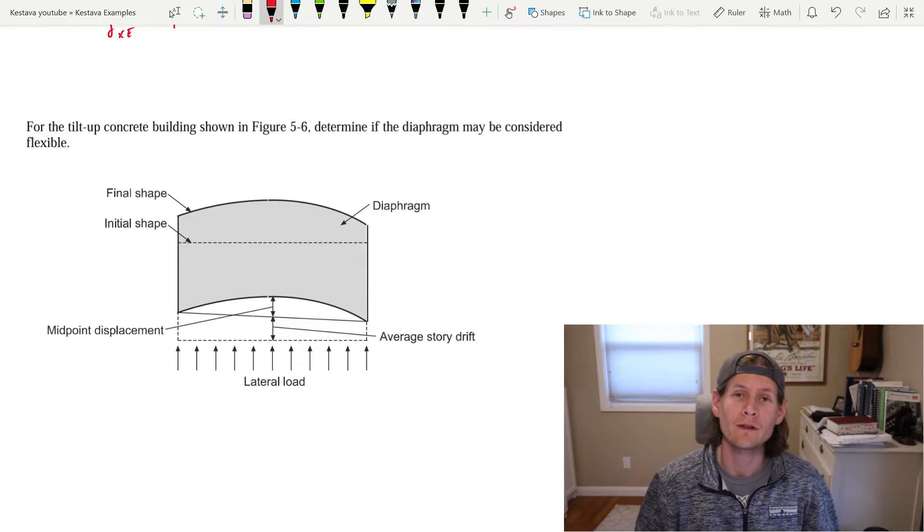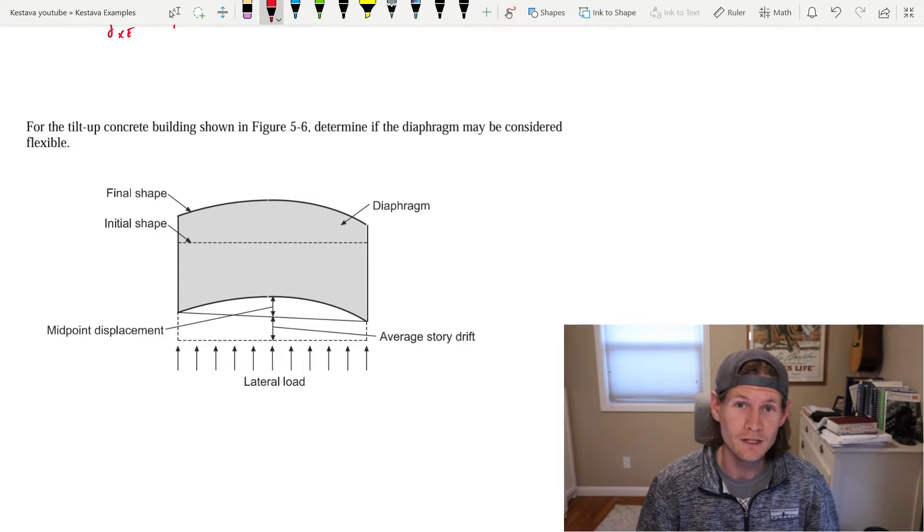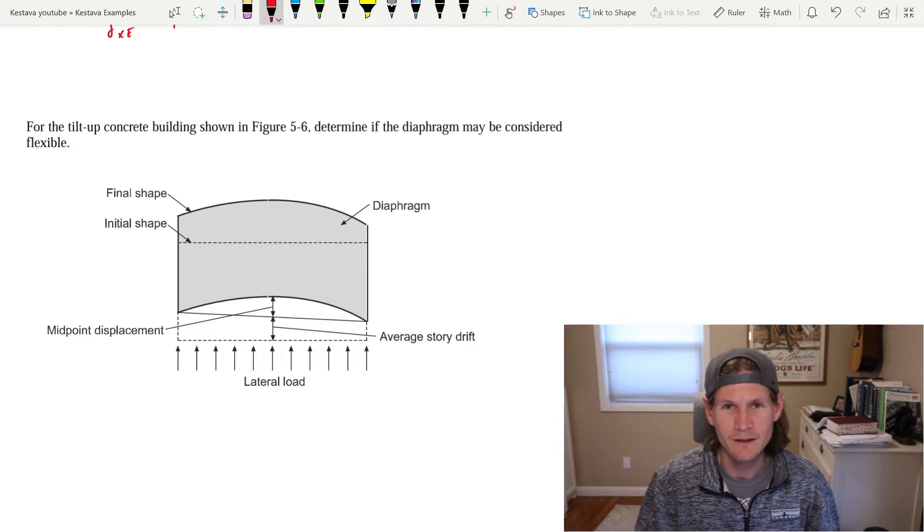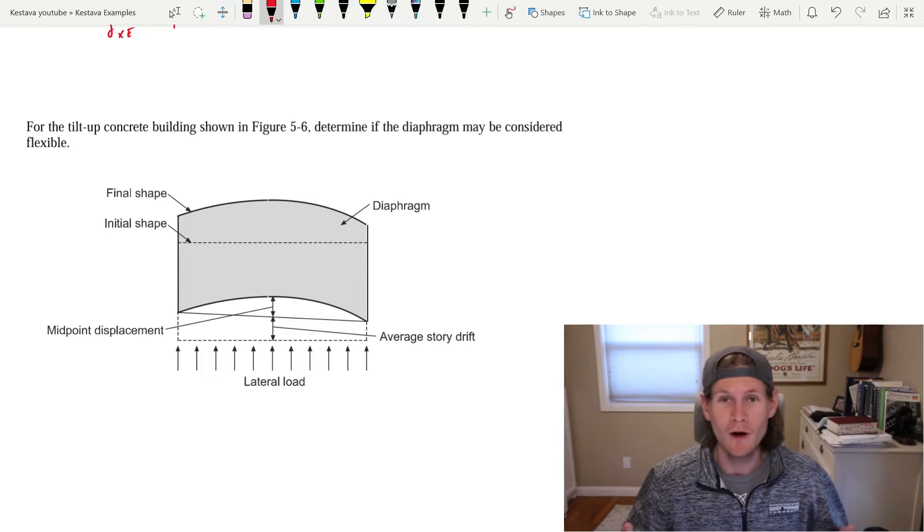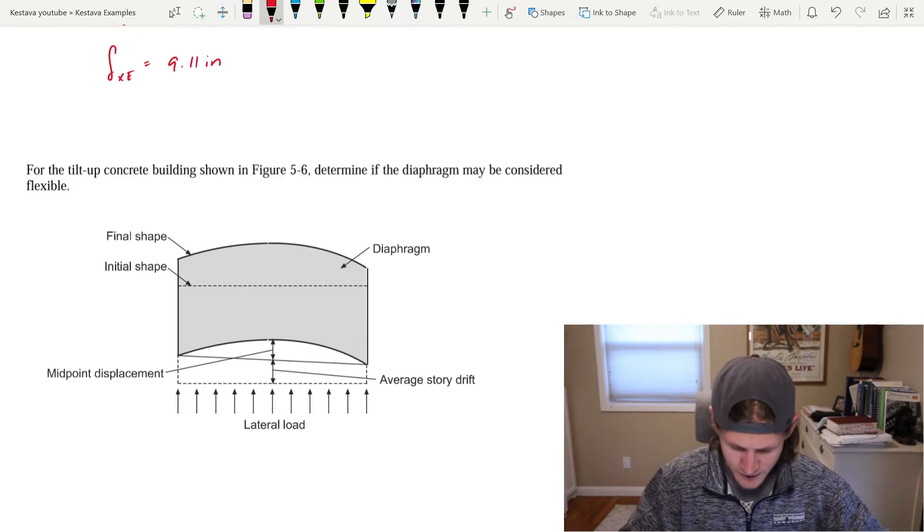All right, I think we have enough background to knock out a design example and actually put some numbers to the theory. Now that we've clearly defined the definitions of a flexible diaphragm and a rigid diaphragm, we're now going to tackle this problem and determine it for our tilt-up structure.